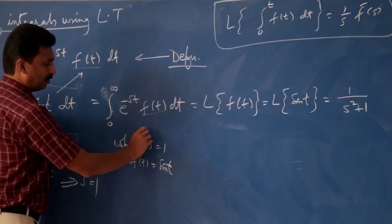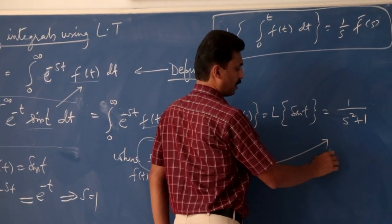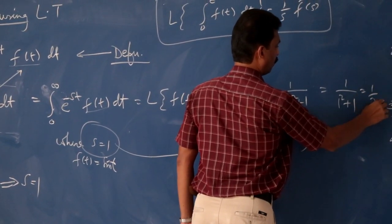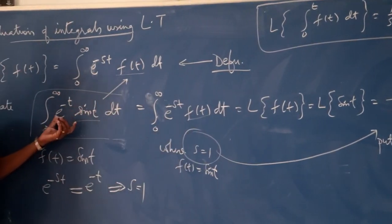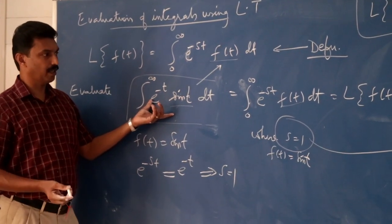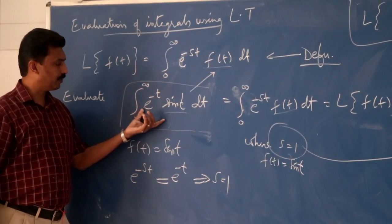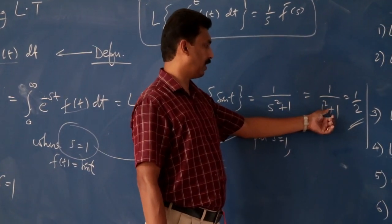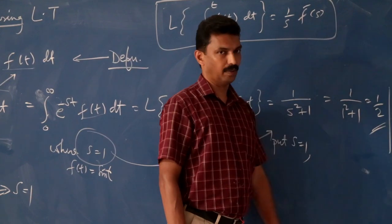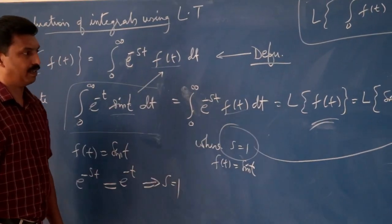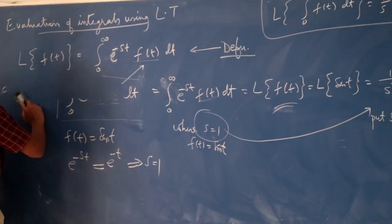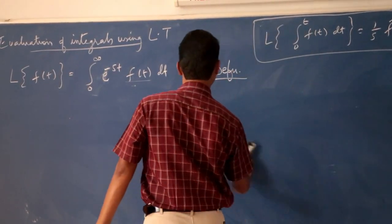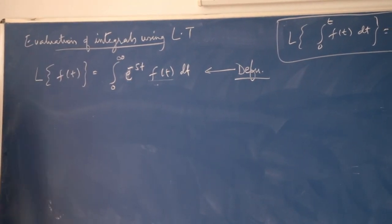Now substituting s = 1, we get 1 divided by 1² + 1, which equals 1/2. This is the application of the Laplace transform of sin t: the formula gives 1/(s² + 1), and replacing s by 1 yields 1/(1 + 1) = 1/2.